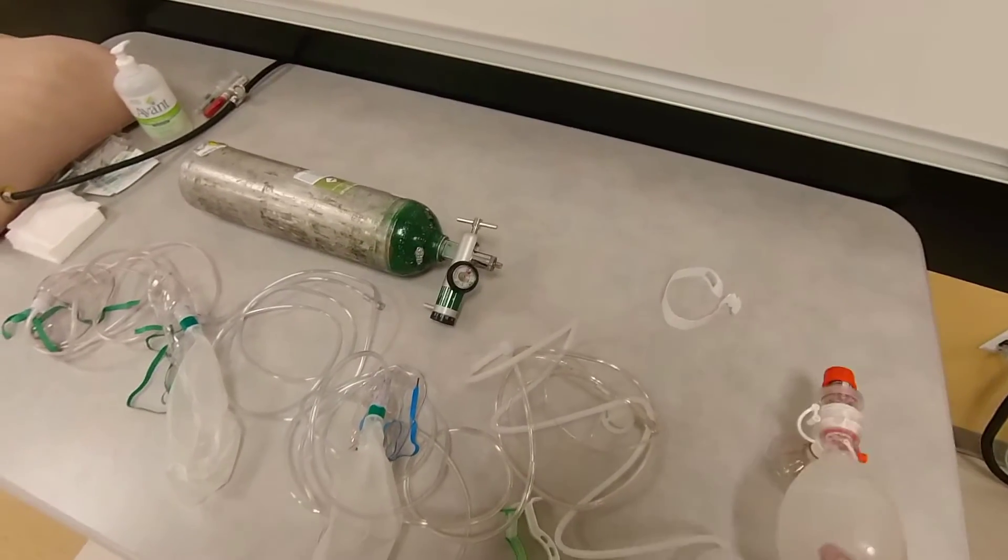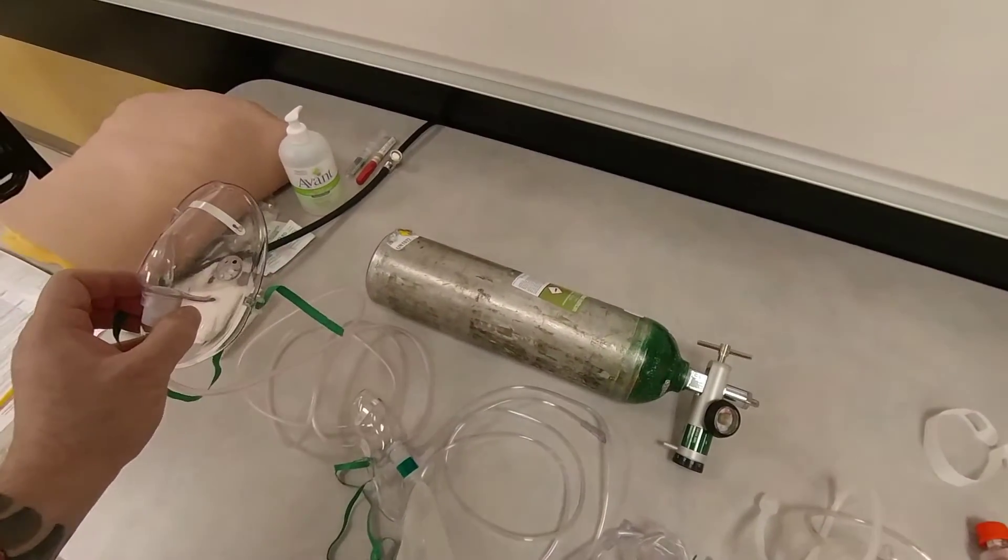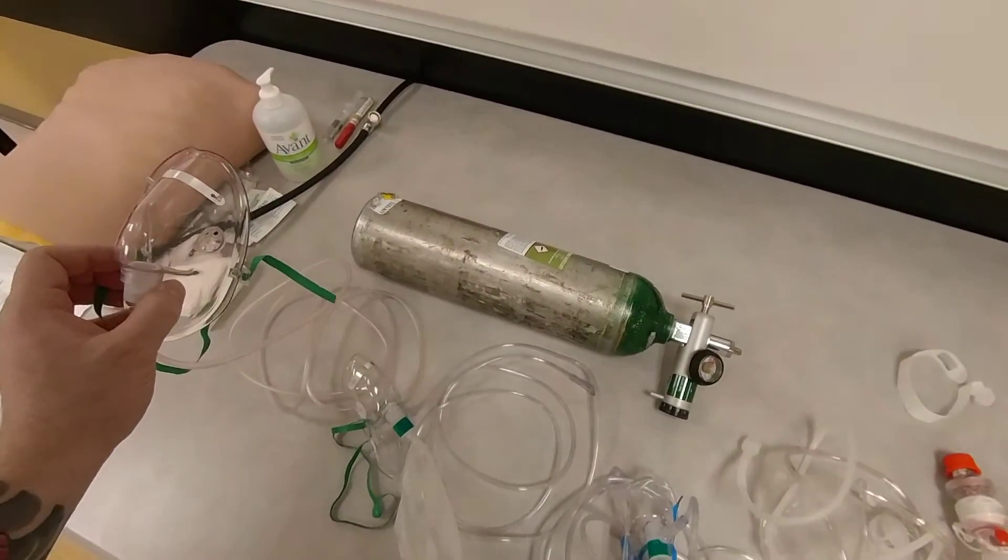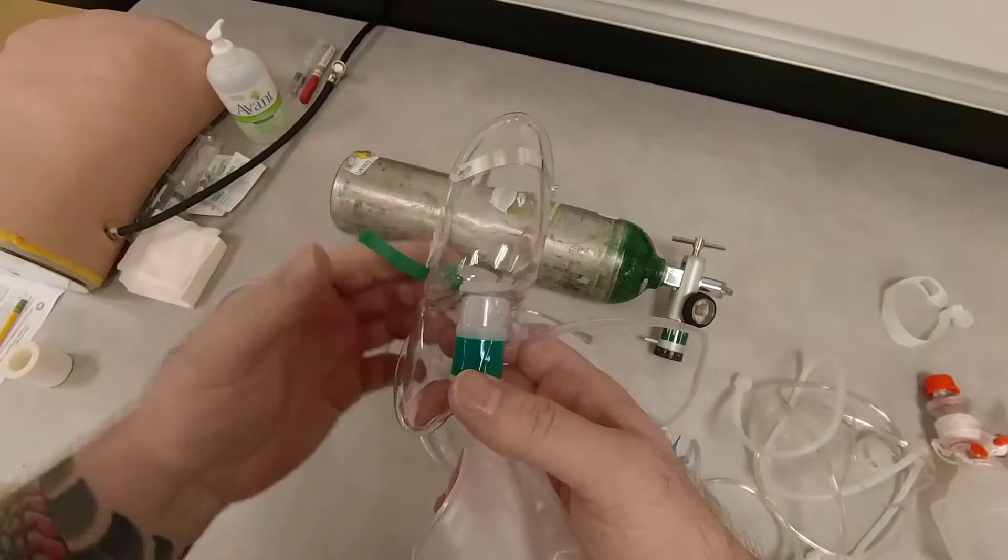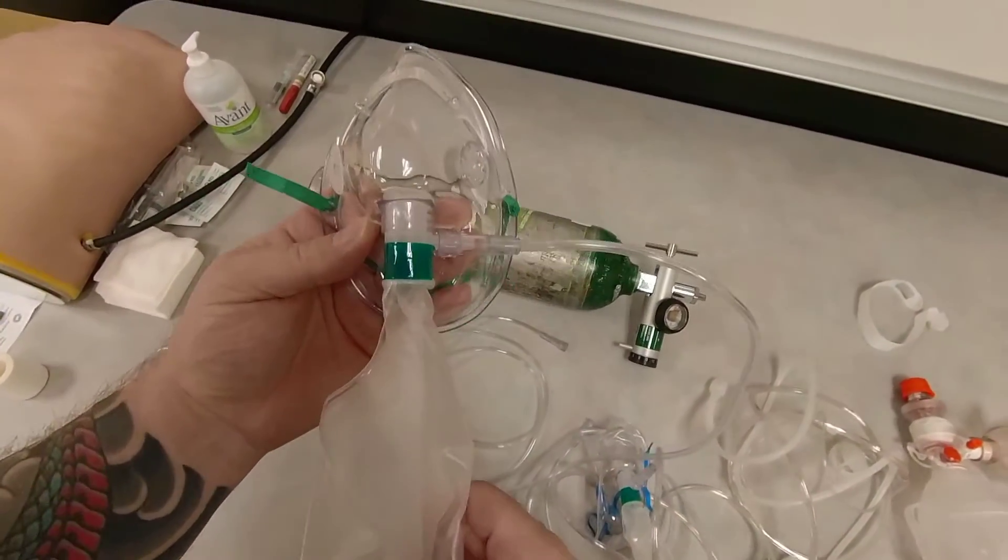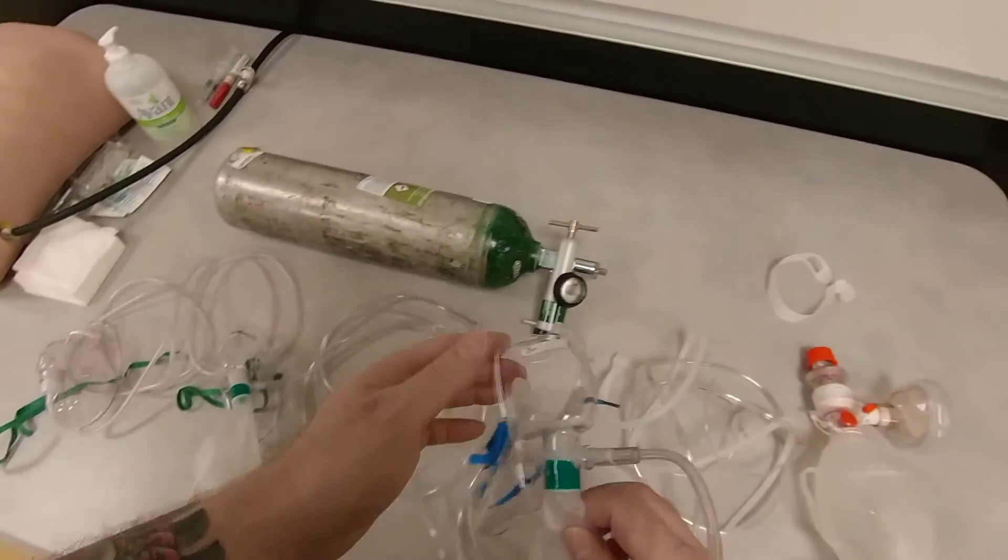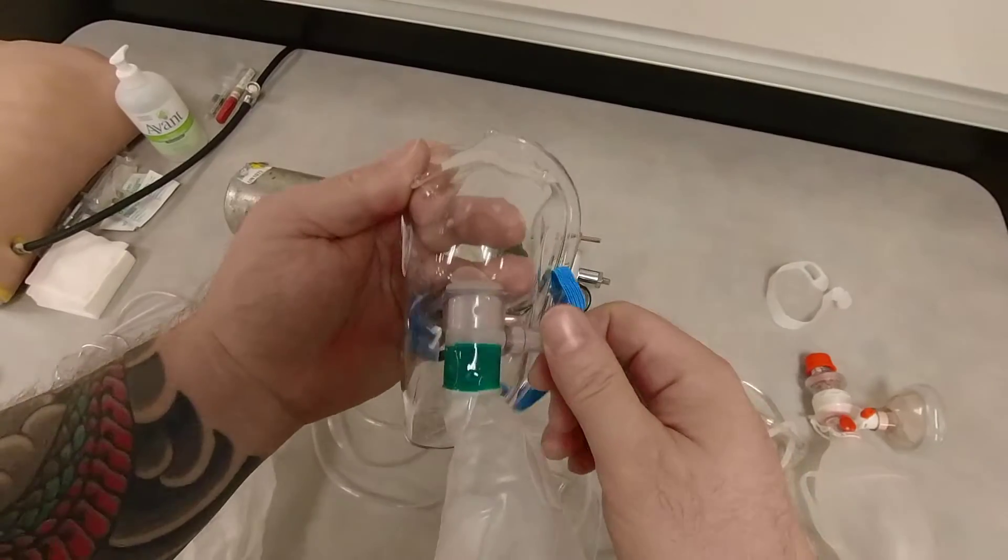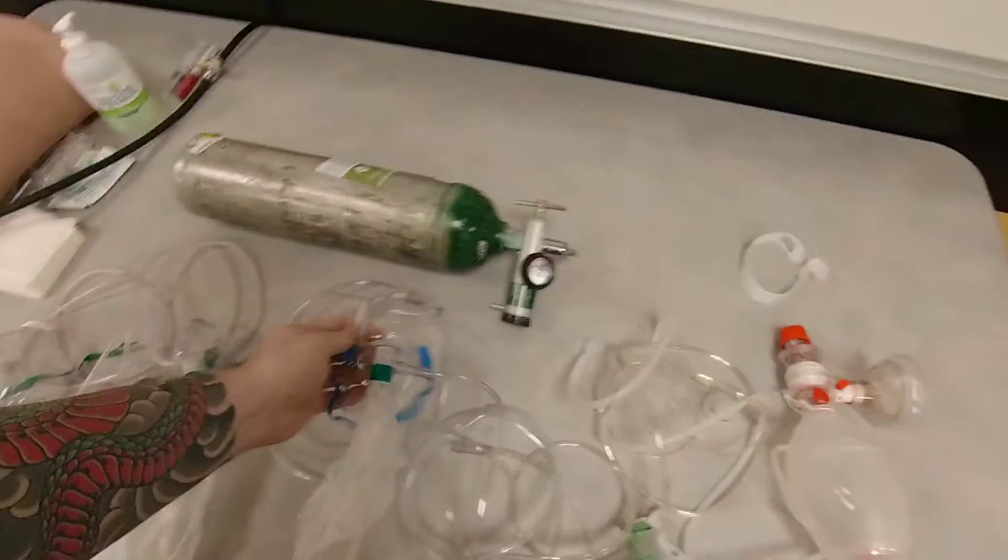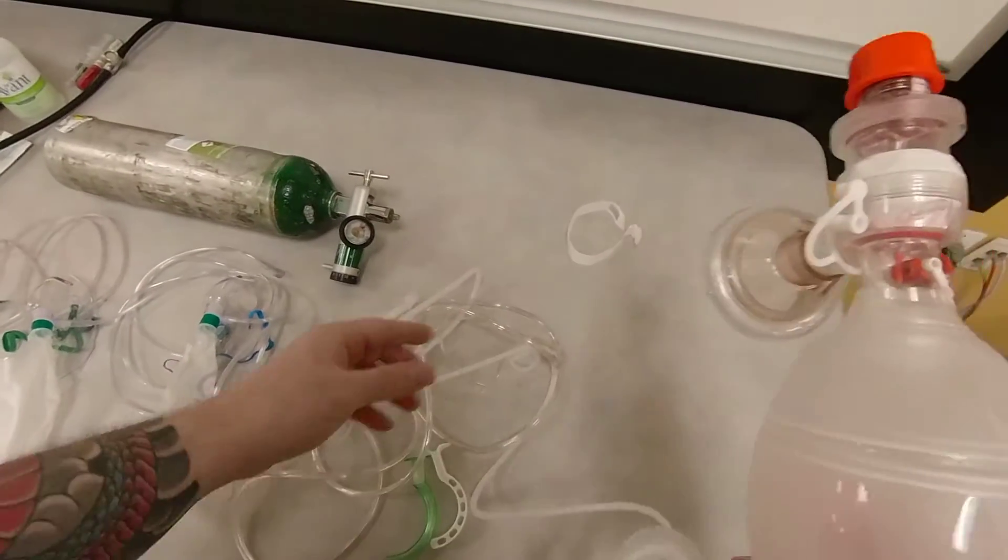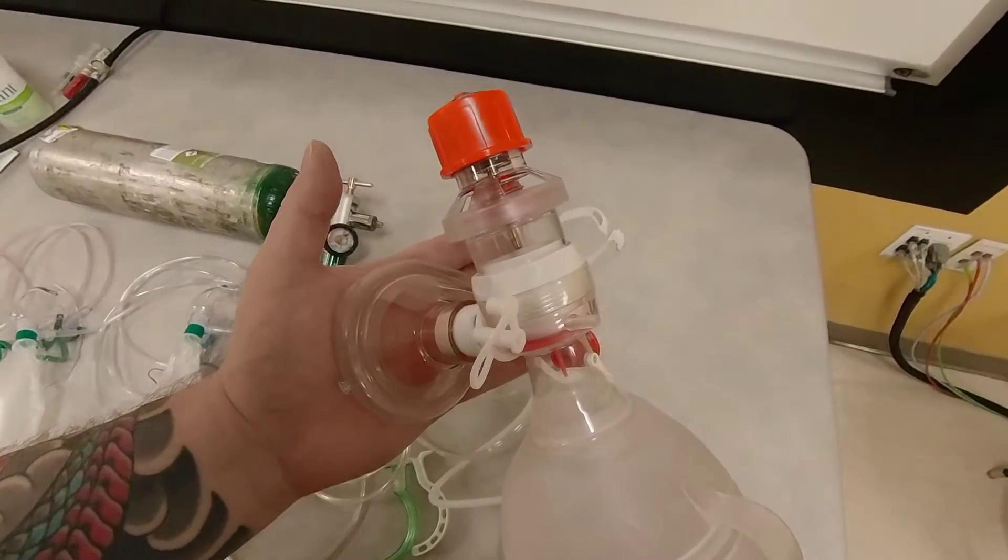Those two concepts are not the same. So just to summarize, simple face mask at 15 liters per minute gives you about 50% FiO2. A non-rebreather mask, which is false non-rebreather mask with a safety valve, gives you about 70% FiO2. And a true non-rebreather mask, if the patient has good minute ventilation, gives you about 90% FiO2. And BVM at 15 liters per minute will give you greater than 90, close to 100% FiO2.